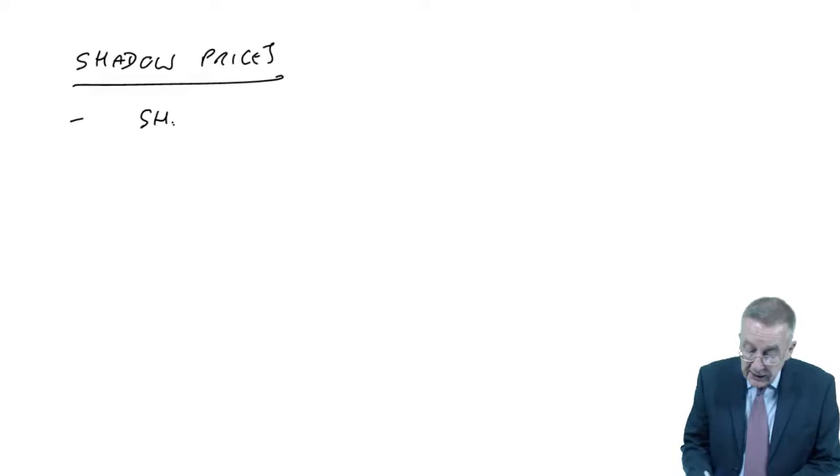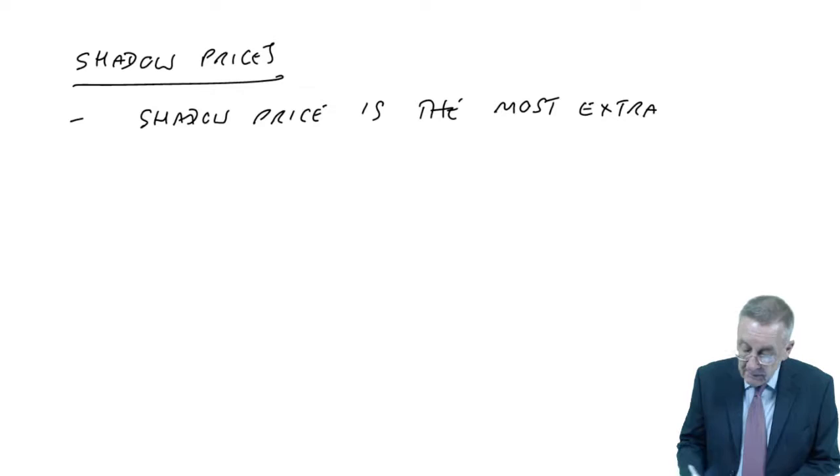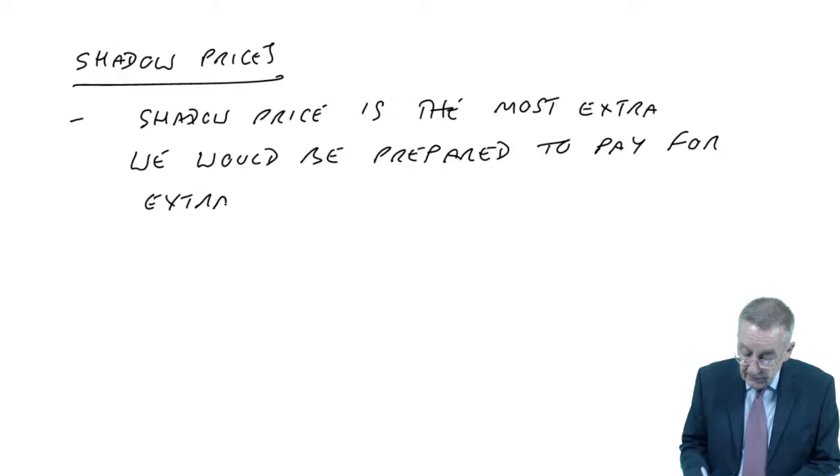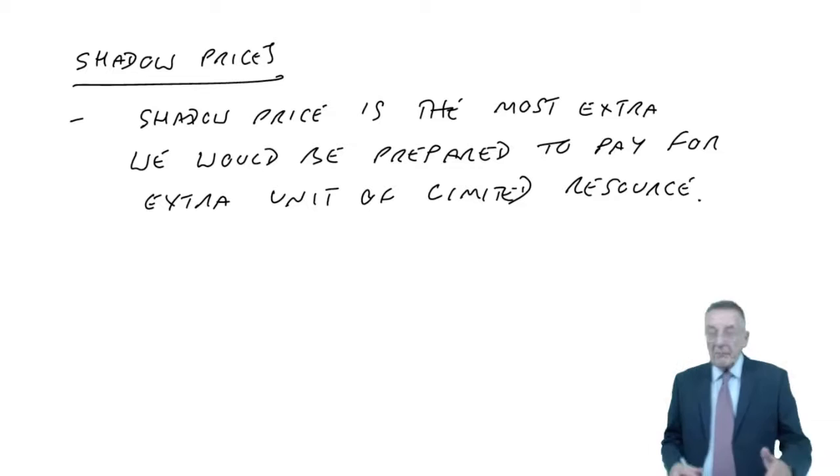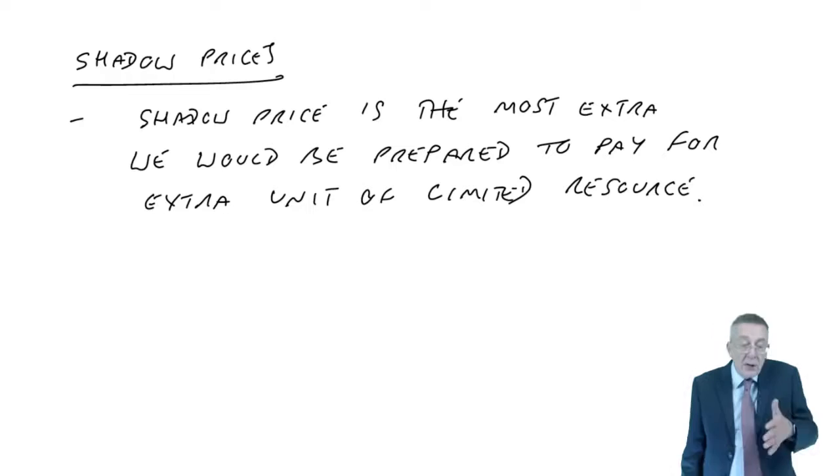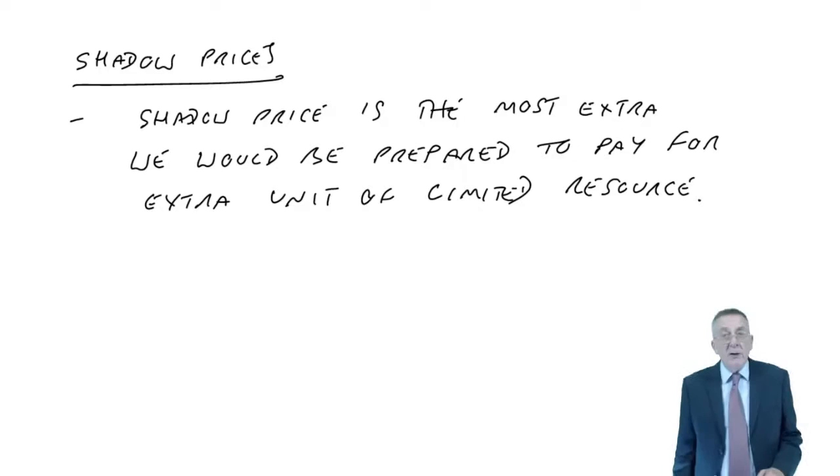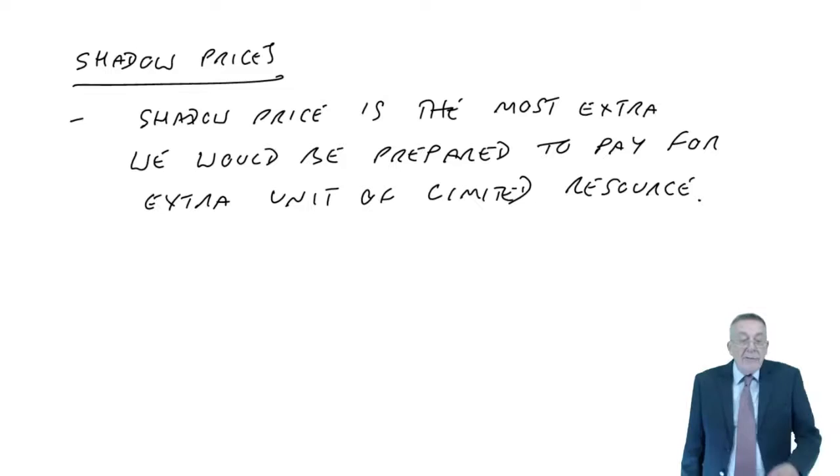The shadow price is the most extra we would be prepared to pay for one extra unit of the limited resource. At the moment we're limited. There's only 80 kilos of material, only 180 hours of labour, only a demand of 10 for executives.